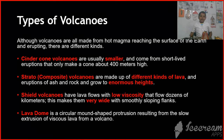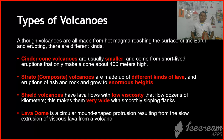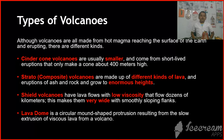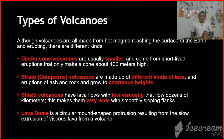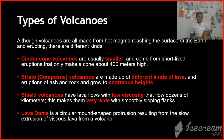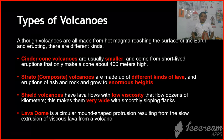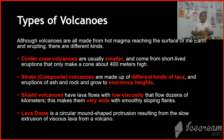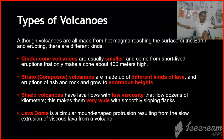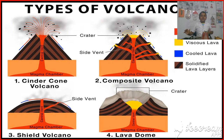Types of volcanoes: cinder cone volcanoes are smaller. Strato volcanoes have different kinds of lava but enormous height. And shield volcanoes have low viscosity but are very, very wide with great lava depth.